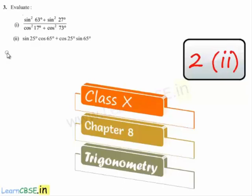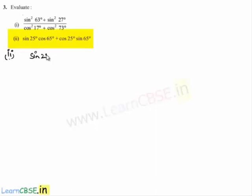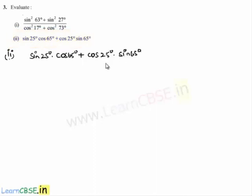Moving on to the solution for the second bit of the third problem. The given expression is sin 25° × cos 65° + cos 25° × sin 65°. In this given expression, there are two terms: sin 25° × cos 65° plus cos 25° × sin 65°.